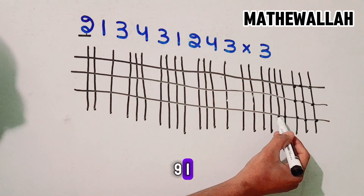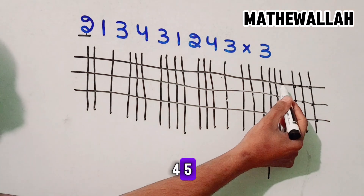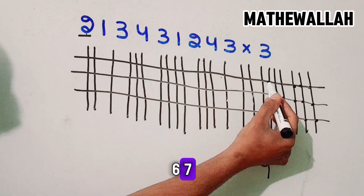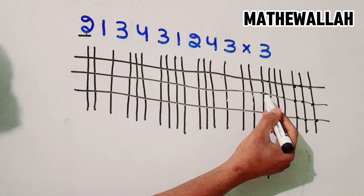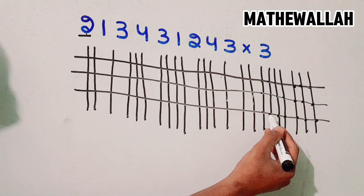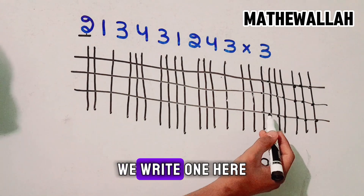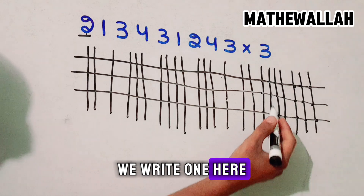Then 1, 2, 3, 4, 5, 6, 7, 8, 9, 10, 11, 12. So we write 2, and we write 1 here to carry.